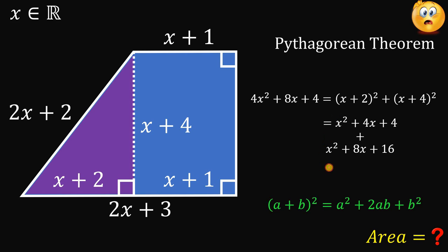Now, combining these two, we have 2x squared, we have 12x, and we have 20. So, we can replace the right-hand side of our equation with 2x squared plus 12x plus 20.